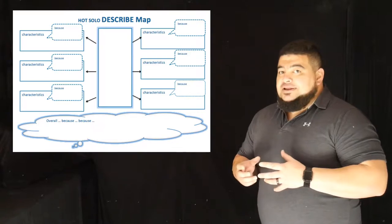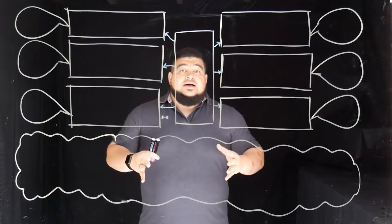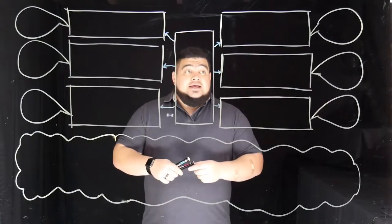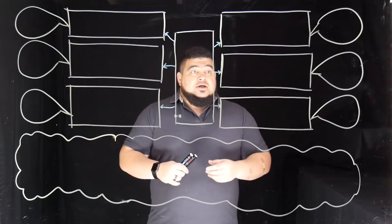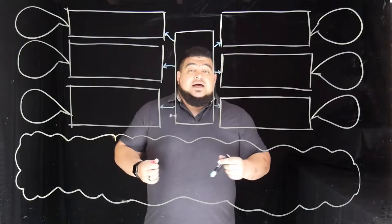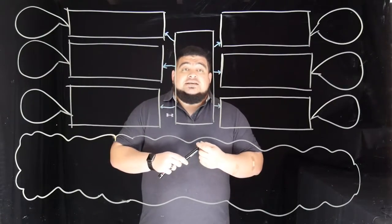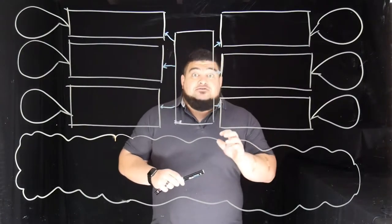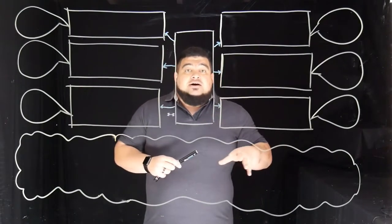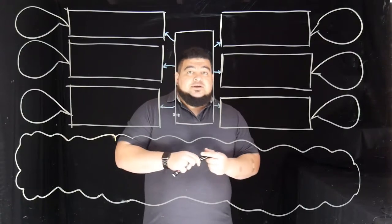I've drawn our SOLO Hot Map — our Describe Hot Map — up on the board. We're going to go through an example using Sunny Bill Williams to try to describe some of his characteristics and show you one really easy way to use the Hot Map.